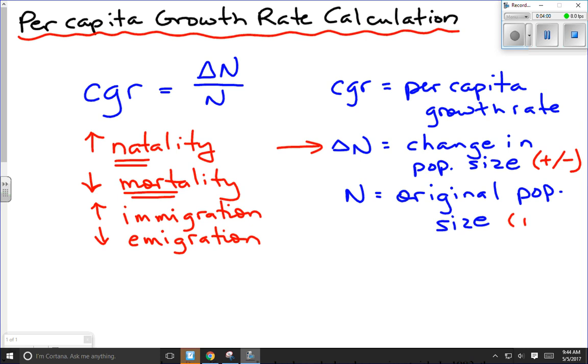Our original population size has to be a positive number. You have to have some individuals in that population to begin with, or you can't have any natality. It wouldn't work. So let's take a look at a couple of examples of how we do the calculation.